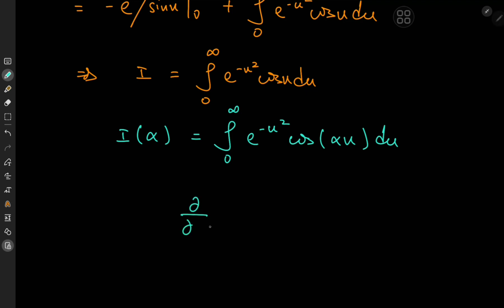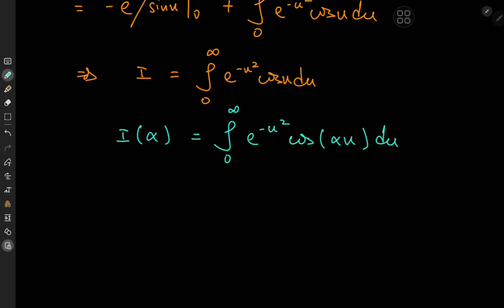What is the motivation behind inserting the alpha parameter into the cosine function? Well, if you differentiate partially with respect to alpha, the cosine of alpha times u term becomes negative sine of alpha times u, and applying the chain rule gives a factor of negative u. This negative u term is quite useful because combined with e to the negative u squared it gives a structure on which we can apply integration by parts. We can switch the order of integration and differentiation because the integral converges thanks to the Gaussian term acting as a damping factor.